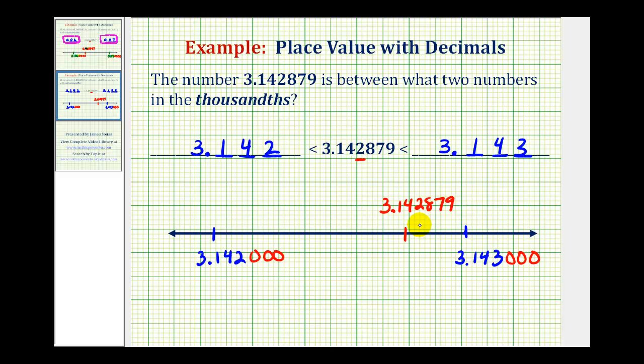And let's compare the corresponding place values. Notice how the first two digits to the right of the decimal point in all three numbers are 1 and 4.